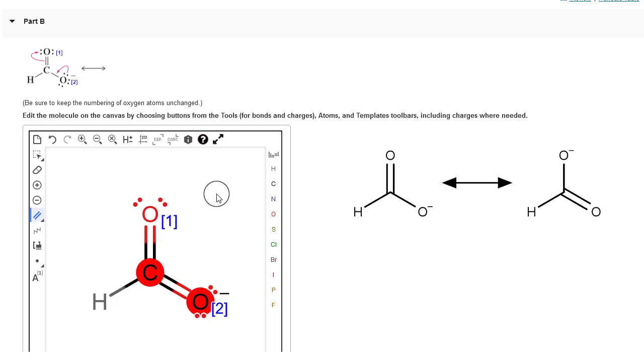So the bond between carbon and oxygen 1 should be a single bond. So I'm going to click on this bond tool again, hold down, choose single bond, click in between the two atoms and that will give us a single bond there.